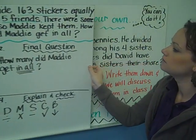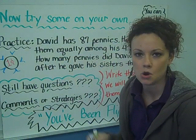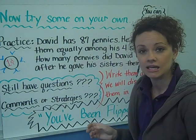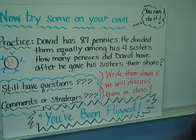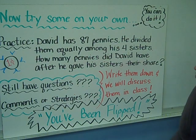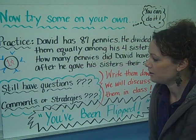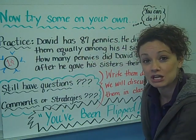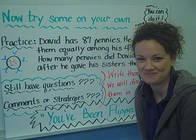Now it's time for you to try one on your own. Here's your practice problem for tonight's homework in box three of your homework sheet: David has 87 pennies. He divided them equally among his four sisters. How many pennies did David have after he gave his sisters their share? Use your four-square organizer, read all the information carefully, and good luck. If you have questions or comments, put them in box four and we'll discuss them in class tomorrow. Thank you.